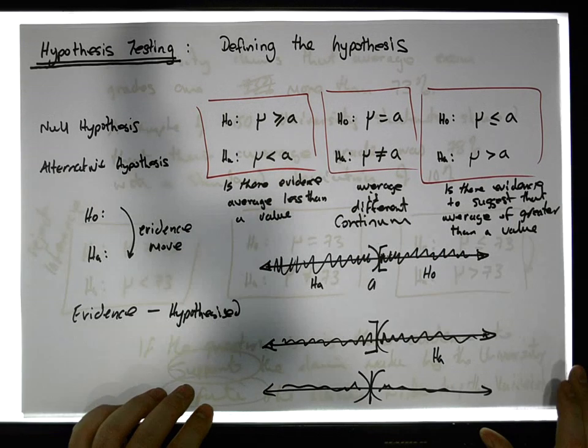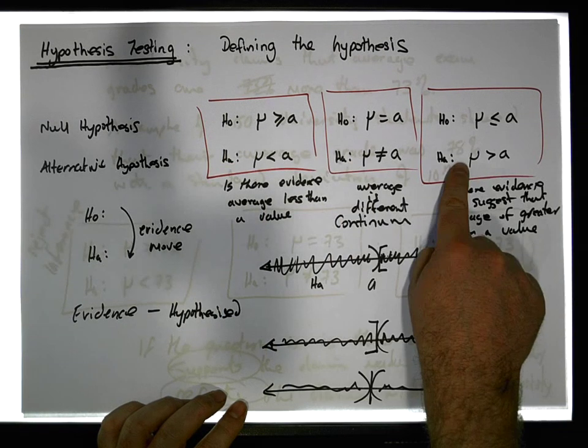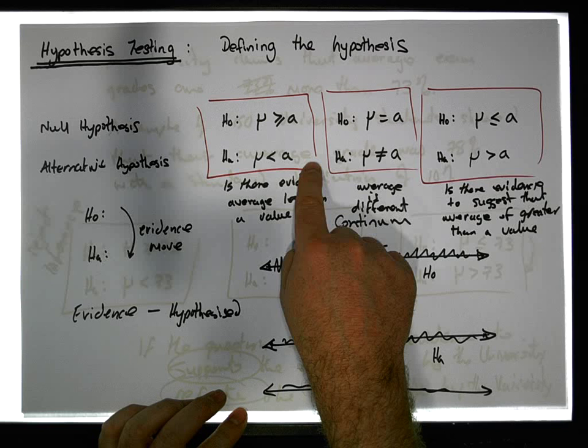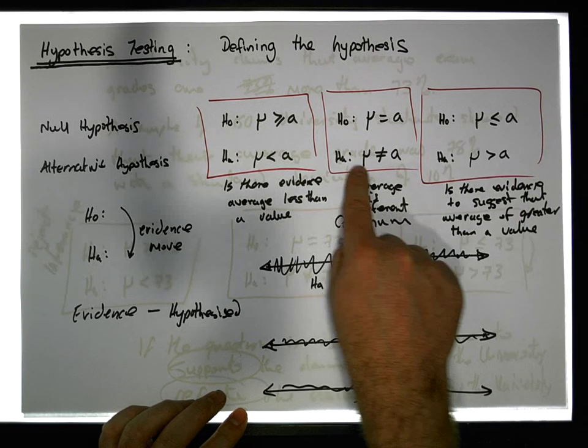Yeah, that's actually more important, actually, to say, that the alternative hypothesis is where you can move to based on the evidence. The alternative hypothesis is what you can infer based on the evidence, but only if you reject.